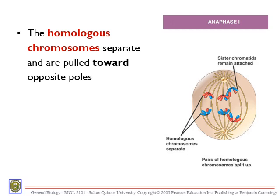In anaphase 1, the homologous chromosomes are separated and pulled toward opposite poles of the cell — one pulled upward and its homolog pulled downward. The non-kinetochore microtubules interact to elongate the cell, because we need to form two daughter cells by the end of meiosis 1.